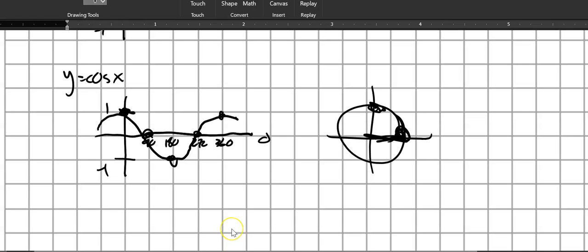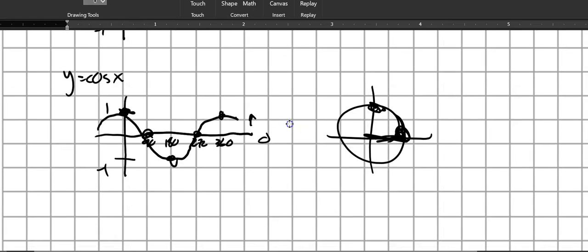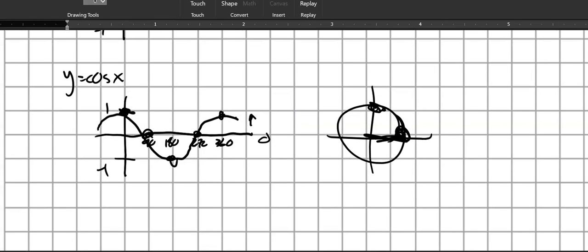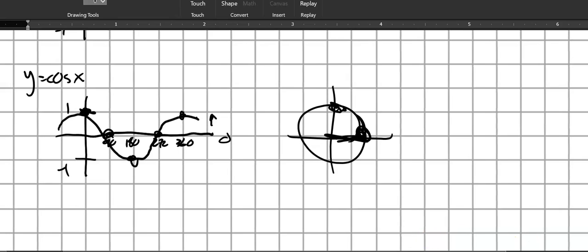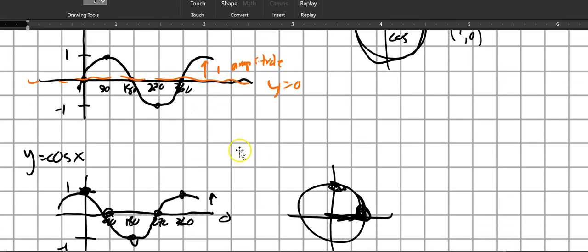Again, midline at 0, amplitude of 1. If you look at those two graphs, you can see they look a lot alike. Cosine and sine. Cosine is just a shifted version of sine, like shifted back 90 degrees. So now we know what those parent graphs look like.